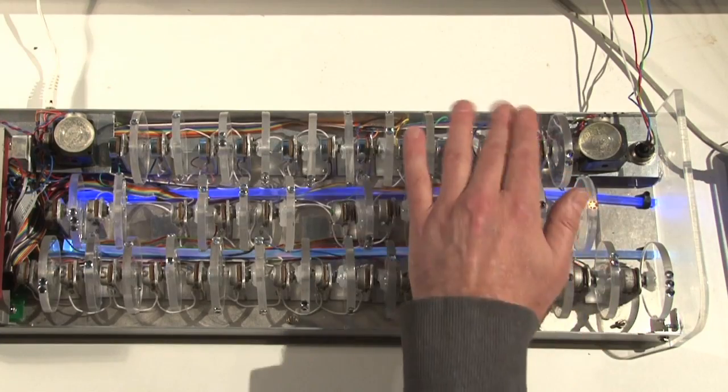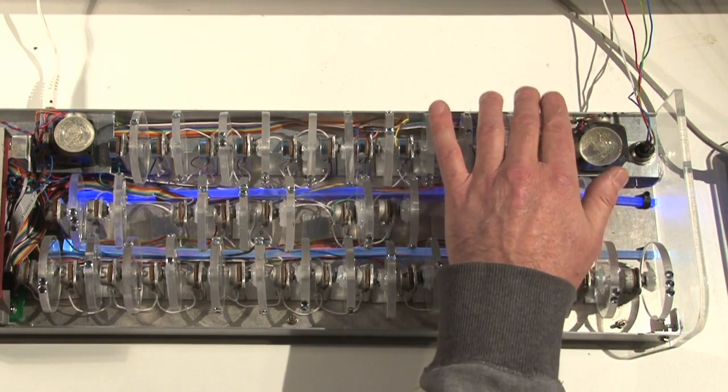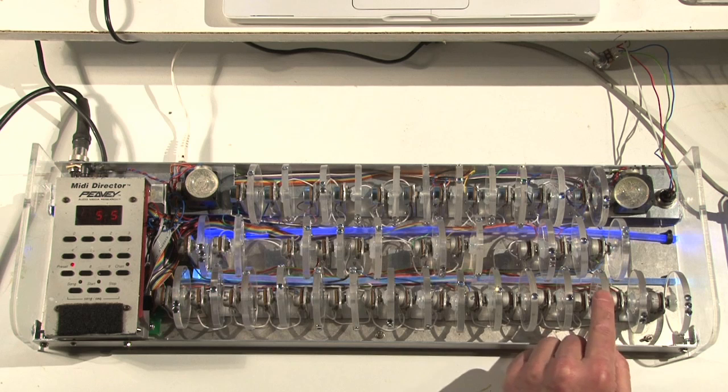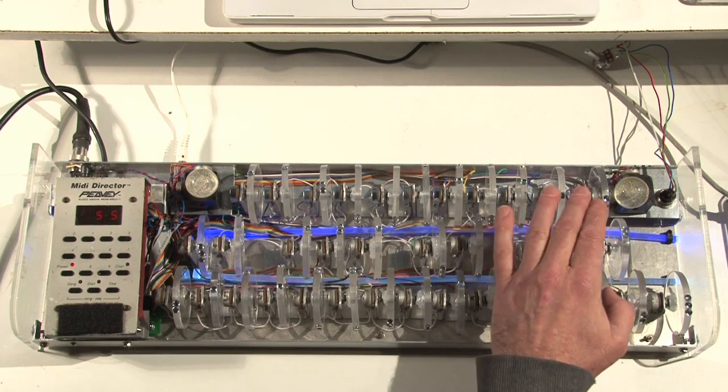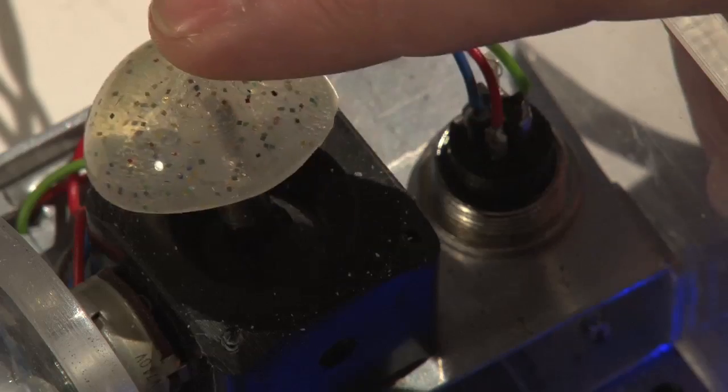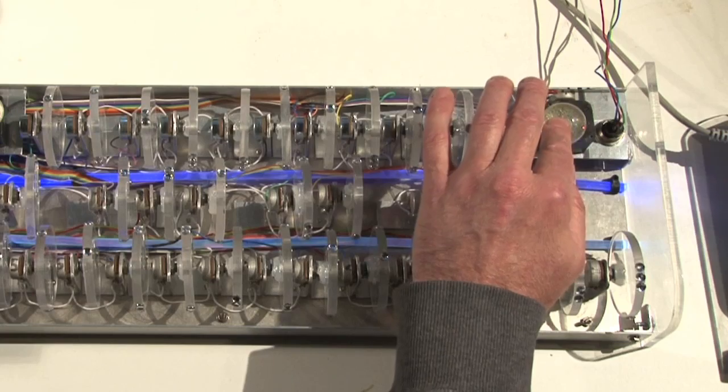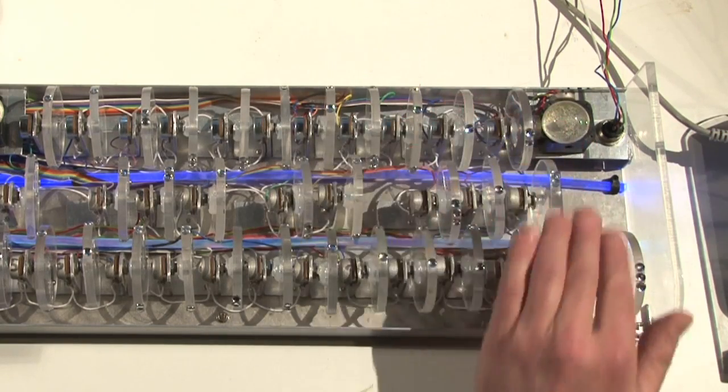Then we have a chorus here which is nice to bring in. I've got a flanger, but on this particular synthesizer it has a flanger built in. The depth of the flanger is here and the speed is here on this joystick.